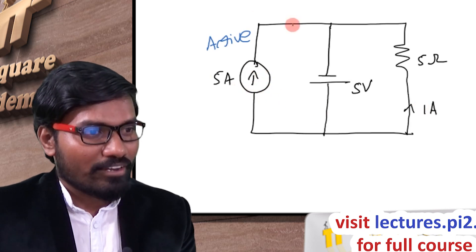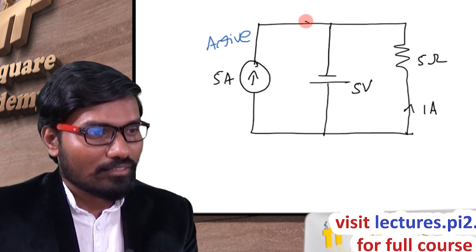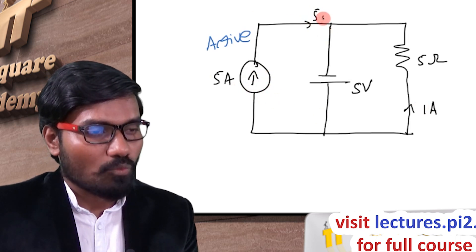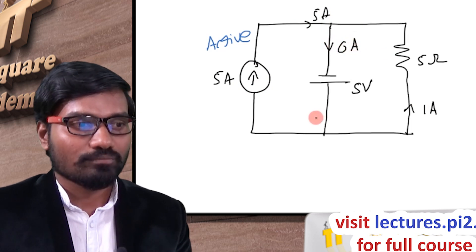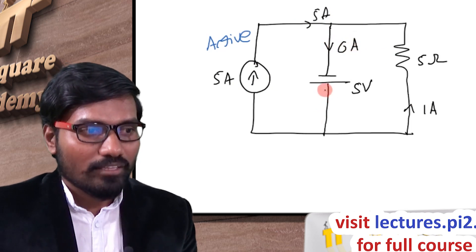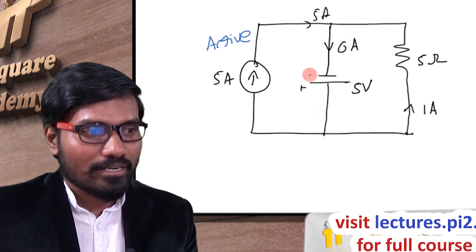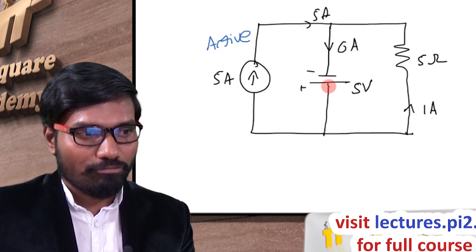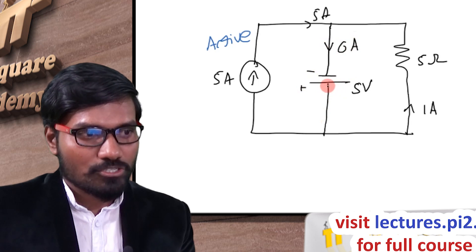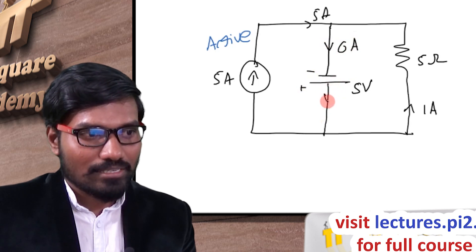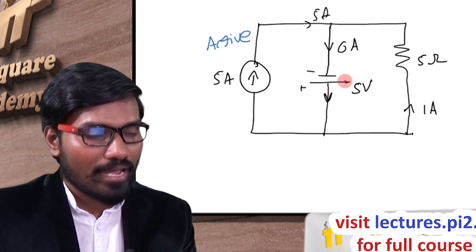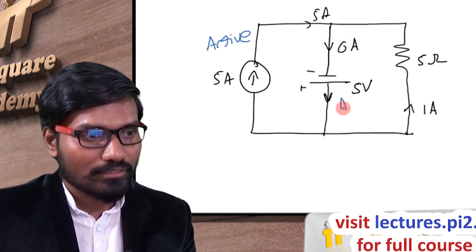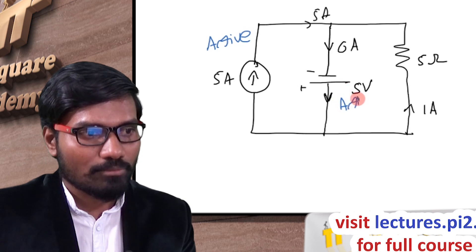This is 5 amperes from the source, and 1 ampere from the branch. So 6 amperes of current will flow here. These are the positive plate and negative plate. From this positive plate, current is leaving, so this is acting as an active element.